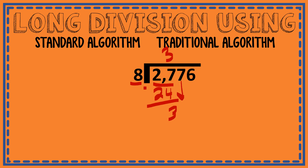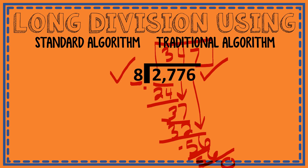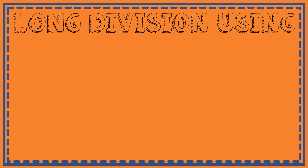I bring down my 7, giving me 37. 37 divided by 8 is 4, because 4 times 8 is 32, and 37 minus 32 is 5. I bring down the 6, giving me 56. 56 divided by 8 is 7, because 7 times 8 is 56, and 56 minus 56 is 0. So 2776 divided into eight groups gives me 347 in each group.